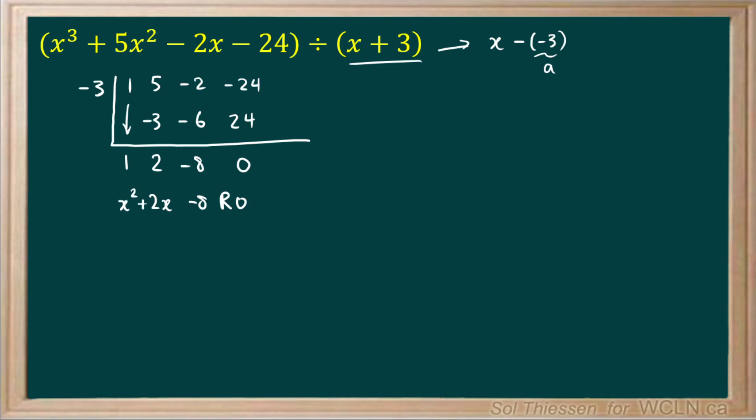Our quotient is x squared plus 2x minus 8, and our remainder is 0. Maybe I'll write that. Q of x is x squared plus 2x minus 8, and our remainder is 0.